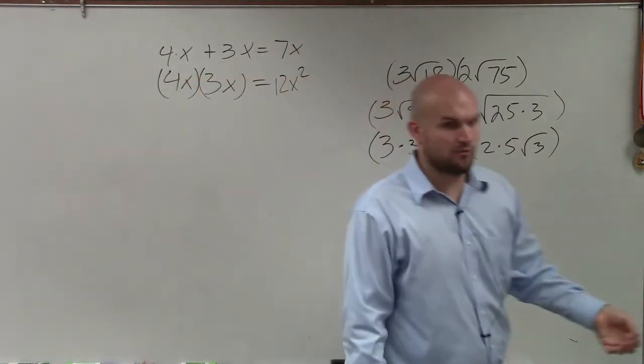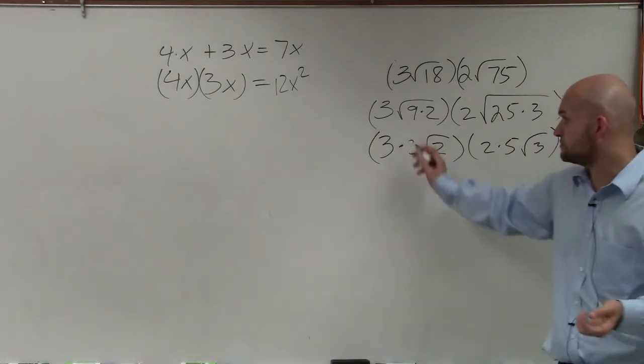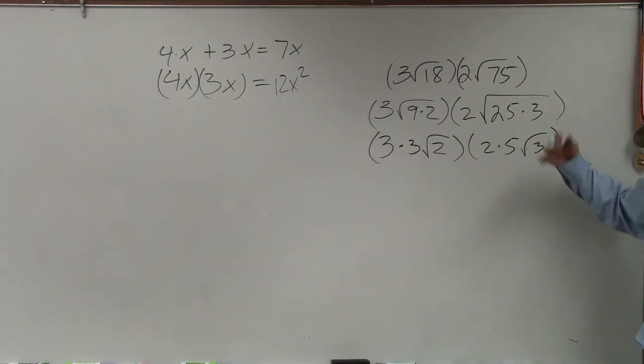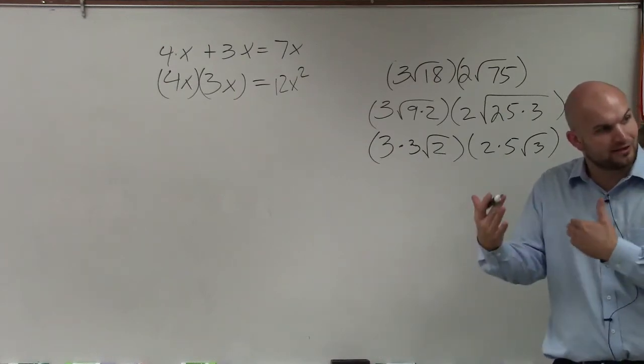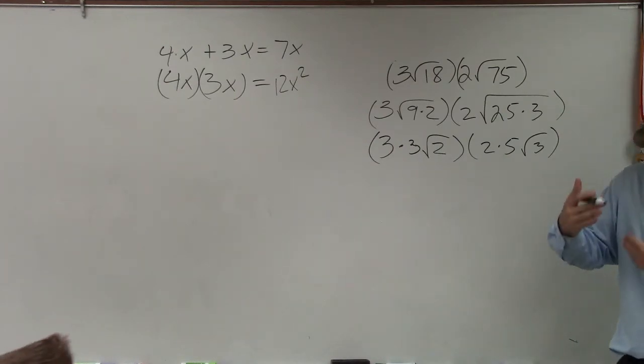Then I took the square root of my square numbers, 9, which was 3, and 25, which is 5. But when I take the square root of them, they go outside of the radical, right? Because I evaluated the square root of those numbers. So they're not inside the radical anymore.